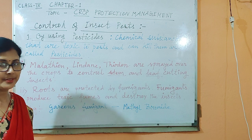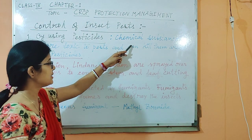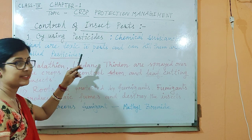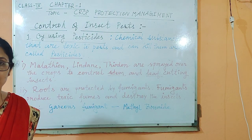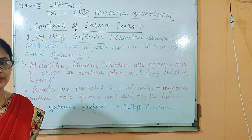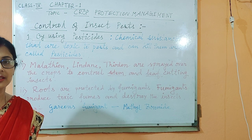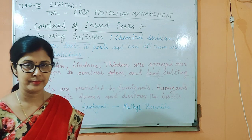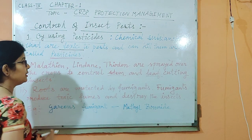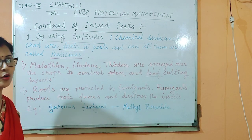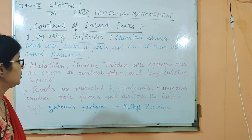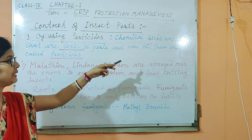So what are pesticides? Pesticides are the chemical substances that are toxic to the pest. The word toxic means very harmful or deadly, which kills the organism. So pesticides are the chemical formulations which are toxic to the pest and kill them.